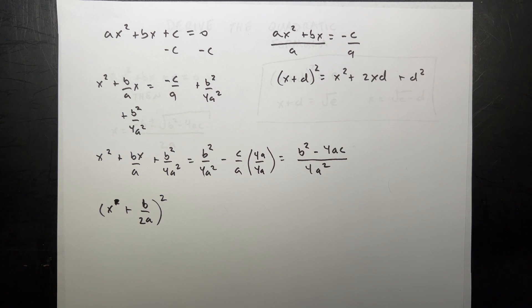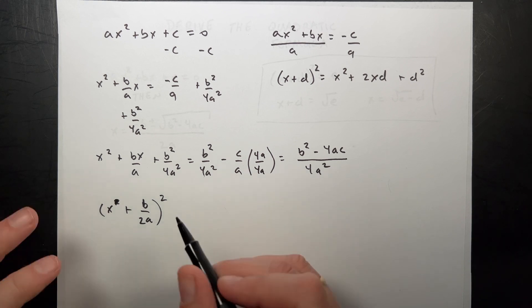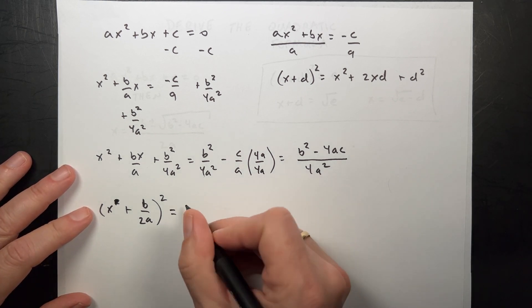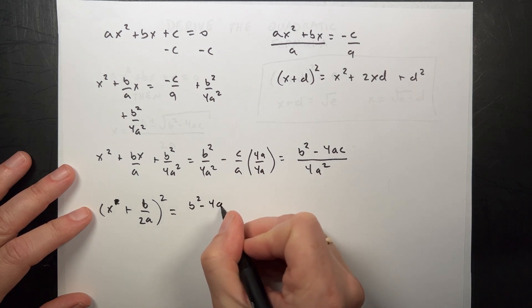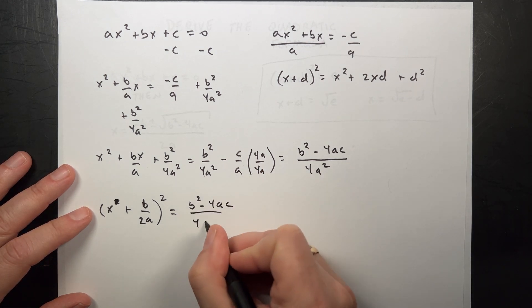So, I mean, it takes a little insight to see that, but you can see now that it at least is true. Maybe you didn't come up with that, but you can see that it is true. So that's this, and that's equal to the other side, b squared minus 4ac, all over 4a squared.